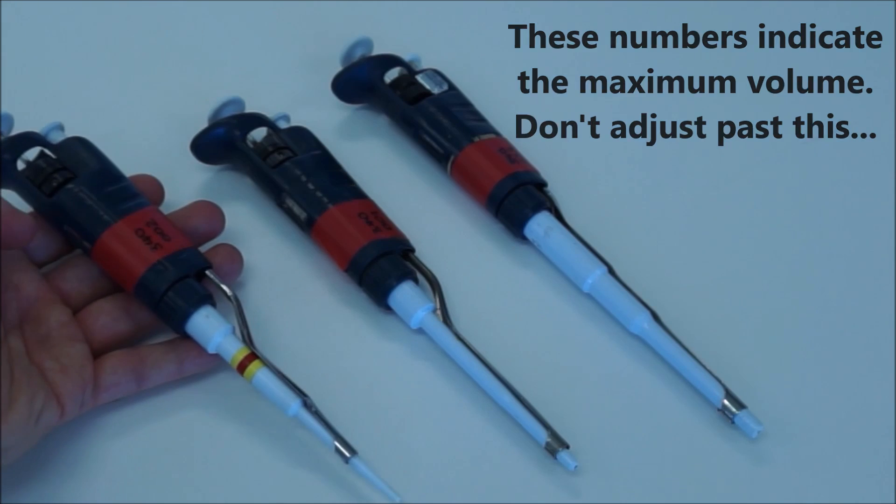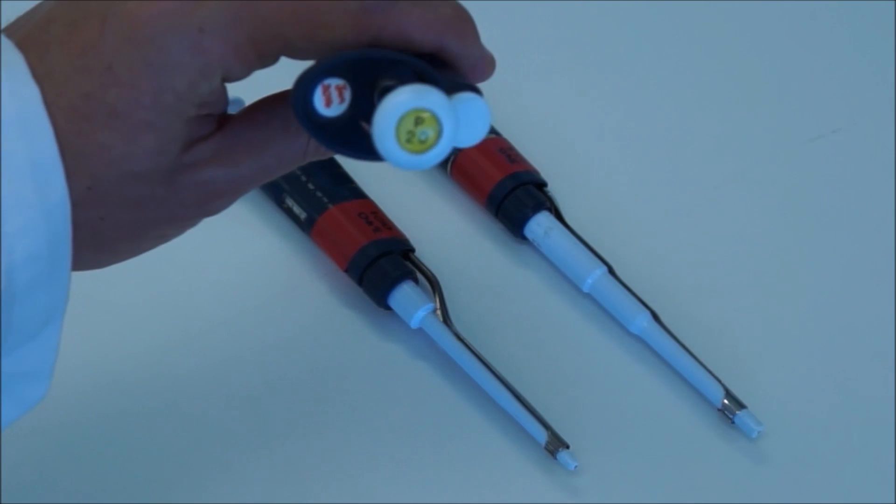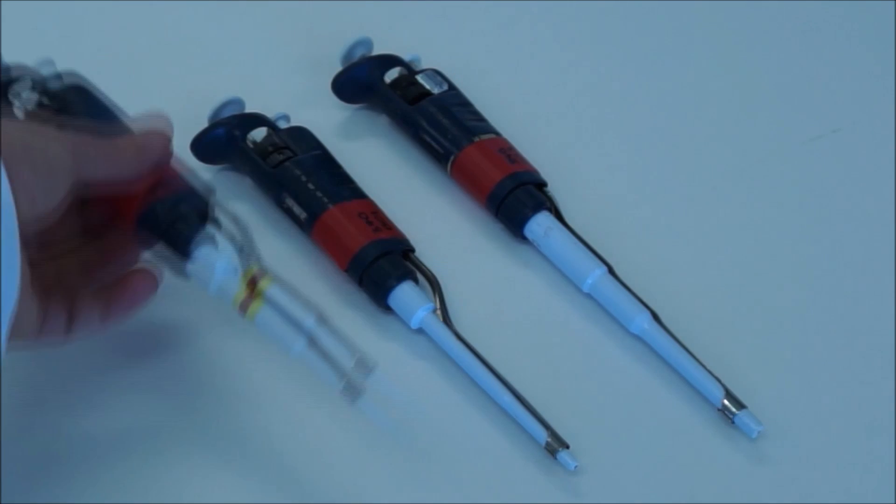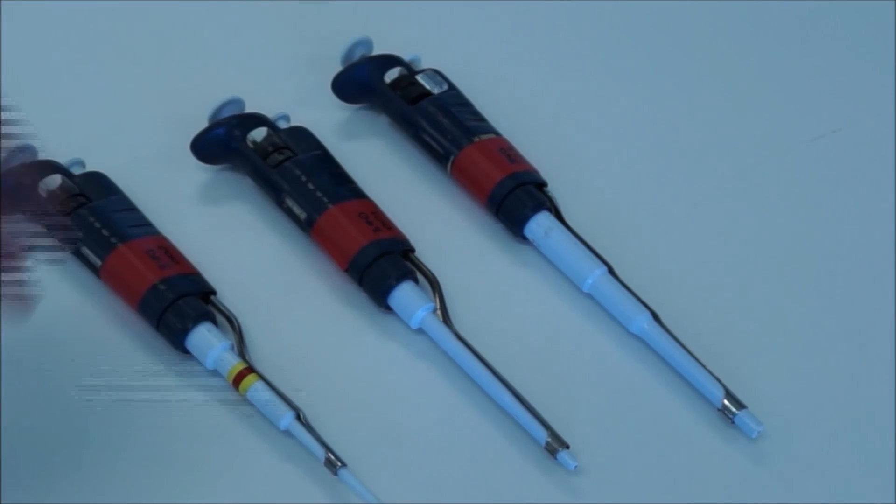I name them P20, 200 and 1000 because that's the maximum volume that you can move around with these pipettes. So this is a P20 because it says it on the end there, P20. And same with the P200 and P1000.